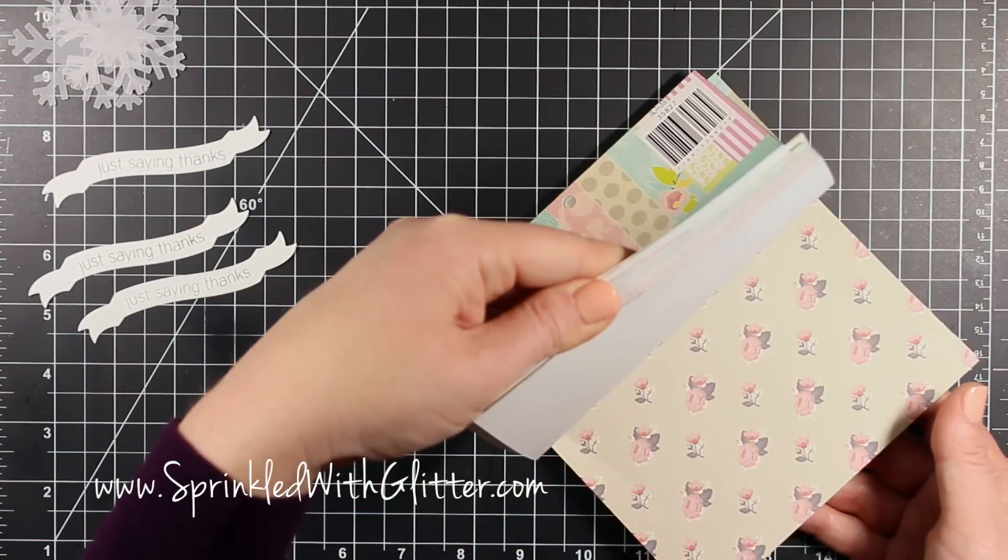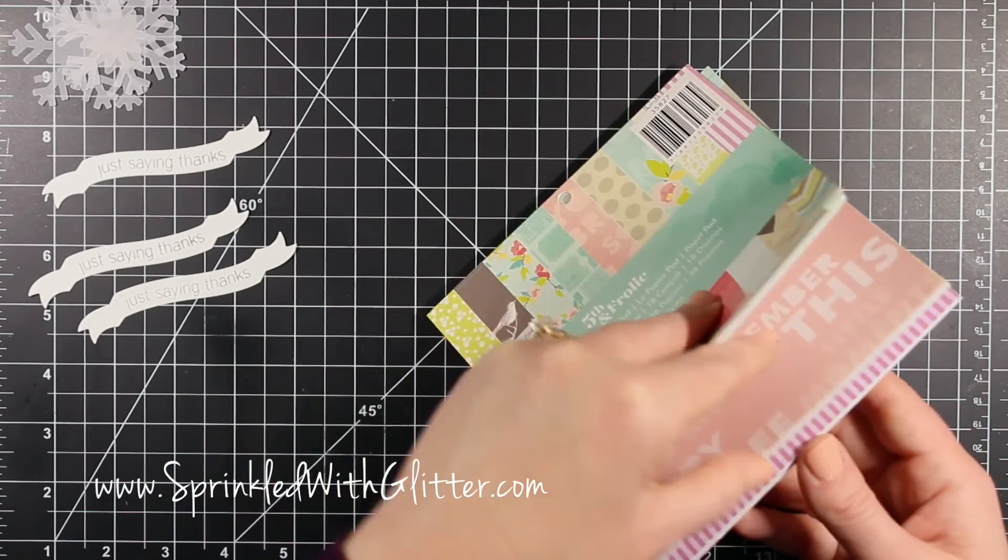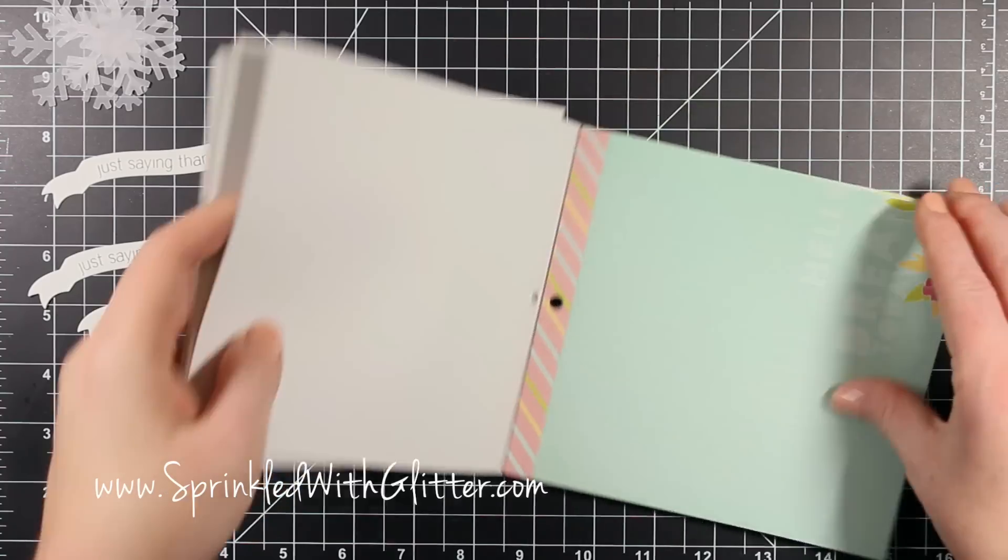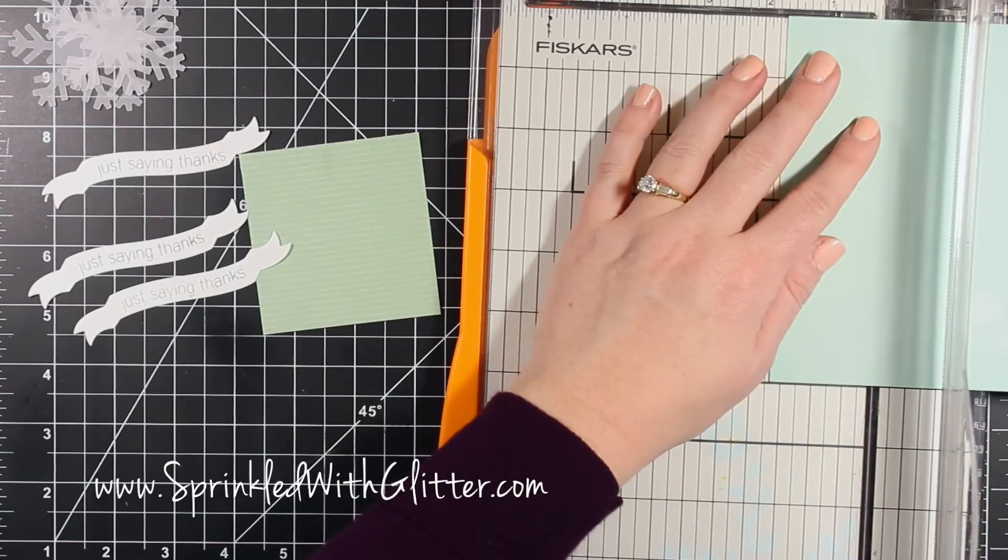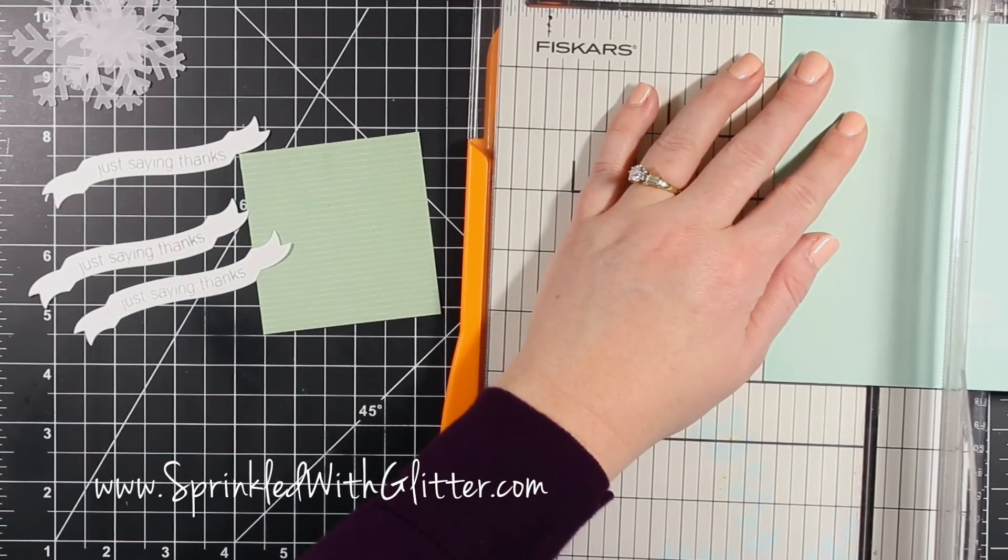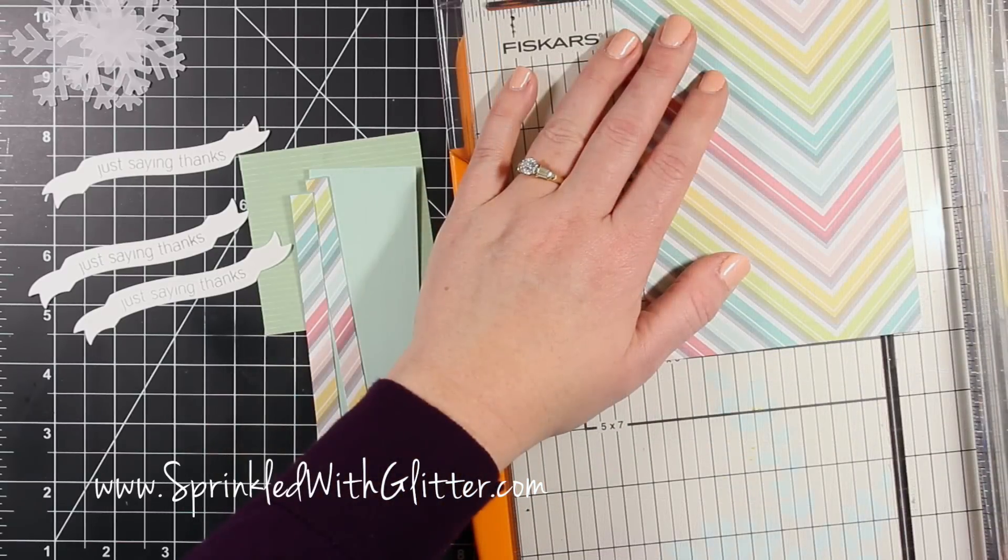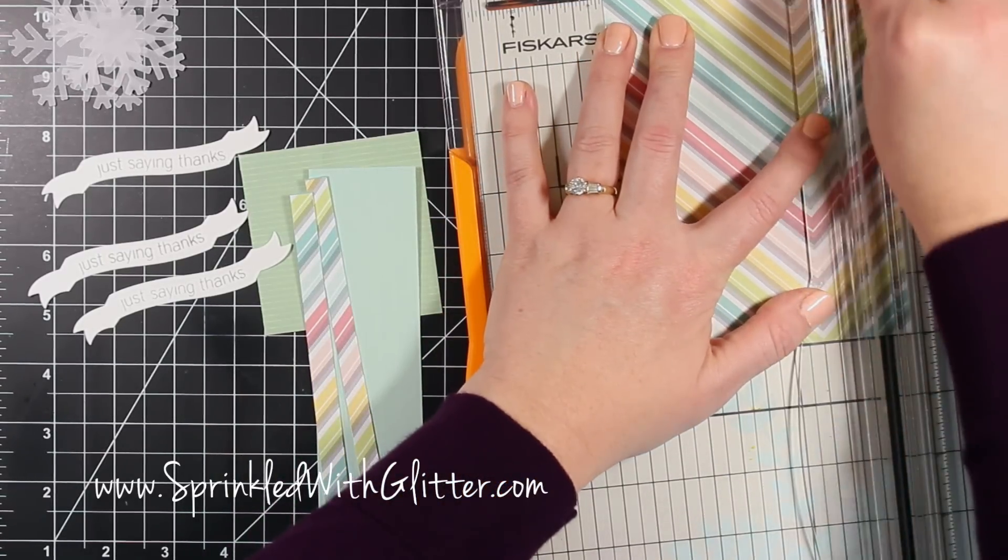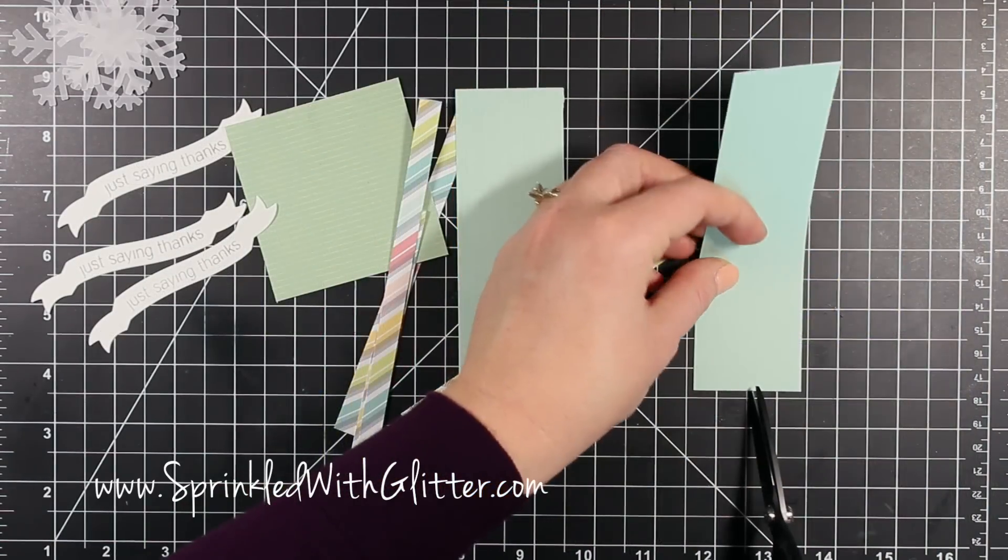Now I pulled out some older pattern paper for this card as well. This is Fifth and Frolic from Dear Lizzy and I'm just going to pick out a couple of patterns that I think I want to use. The first one is going to be this blue one. I'm going to trim this down to about one and three-quarter inches wide because I'm going to make a nice big banner shape. And then this chevron pattern, I'm cutting three different strips of half inch wide.